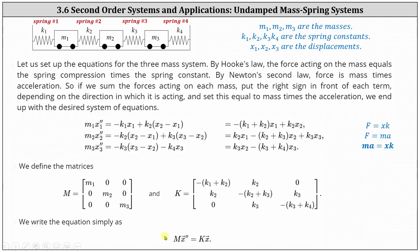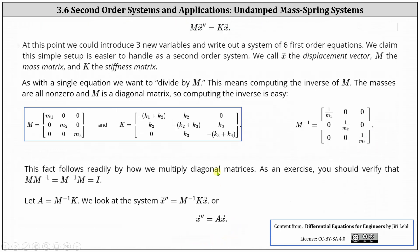Now we write the equation as matrix M times X double prime equals K times X. At this point, we could introduce three new variables and write out a system of six first-order equations. We claim our setup is easier to handle as a second-order system. We call vector X a displacement vector, matrix M the mass matrix, and matrix K the stiffness matrix.